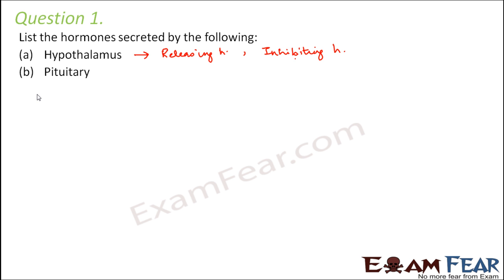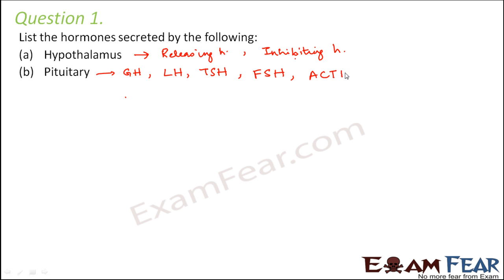Next is the pituitary — the master gland. It secretes many hormones that in turn control the other glands of the body. Some of the hormones secreted by the pituitary are: growth hormone, luteinizing hormone, thyroid stimulating hormone, follicle stimulating hormone, ACTH (adrenocorticotrophic hormone), and prolactin. Most of these are secreted by the anterior pituitary. The posterior pituitary also secretes oxytocin and vasopressin.